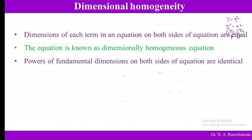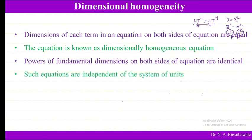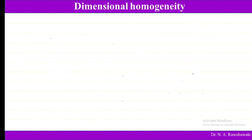If on the left-hand side we find L·T⁻¹ and on the right-hand side we also find L·T⁻¹, then the equation is dimensionally homogeneous. The powers of the fundamental dimensions on both sides are identical. Such equations are independent of the system of units — any system can be used.